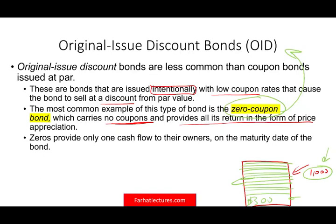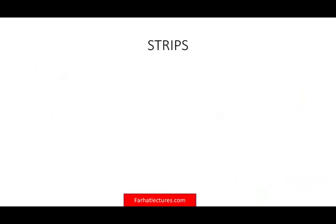Zero coupon bonds provide only one cash flow to their owners, and that's at maturity — you get your $1,000. So the zero coupon bond is a form of OID, the original issue discount bond. We'll talk about this for tax purposes in this session as well, and in my tax course I go into a bit more detail.